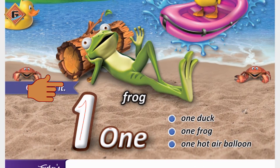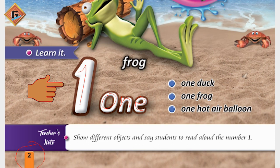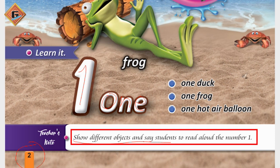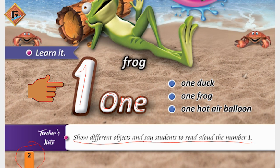We start from page number two. On this page, about number one — the digit is O-N-E, and here is the spelling of one. First of all, I have a teacher's note: show different objects and say to students to read aloud the number one. Okay, now we're going to start our reading, which is about number one.